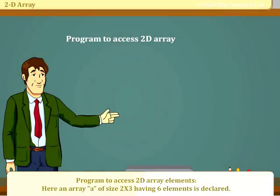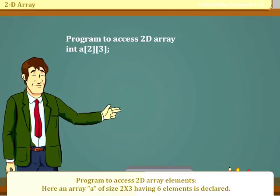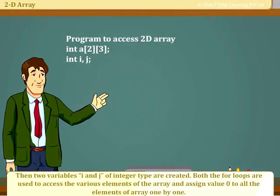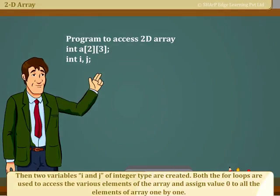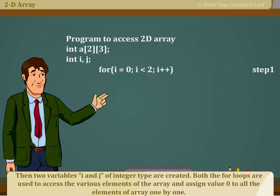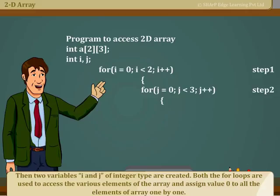Program to access 2D array elements. Here, an array A of size 2 x 3 having 6 elements is declared. Then, two variables i and j of integer type are created. For loops are used to access the various elements of the array and in this program, it assigns value 0 to all the elements of array one by one.